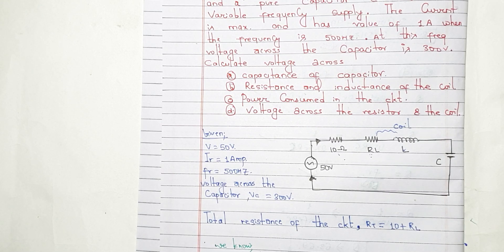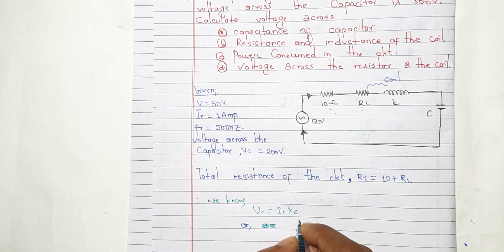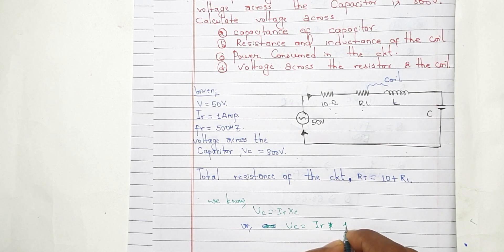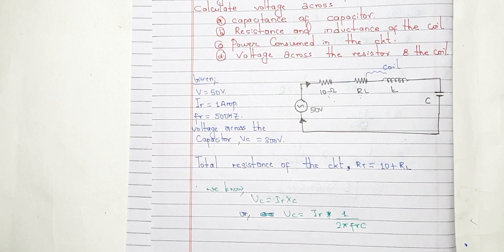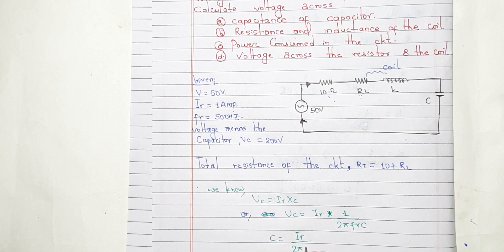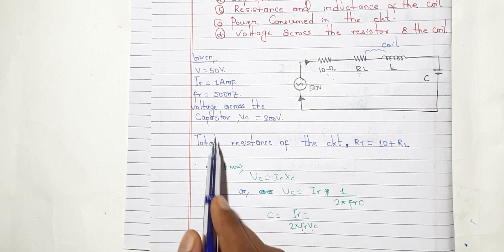For the capacitor, V_C is equal to I times X_C. V_C equals I times X_C, where X_C equals 1 divided by 2πf_R times C.